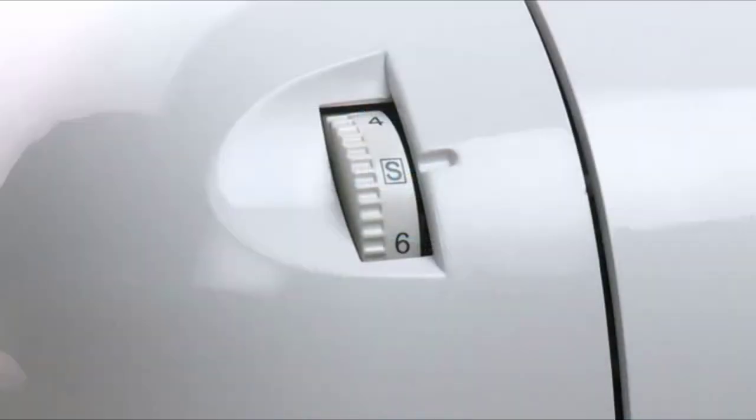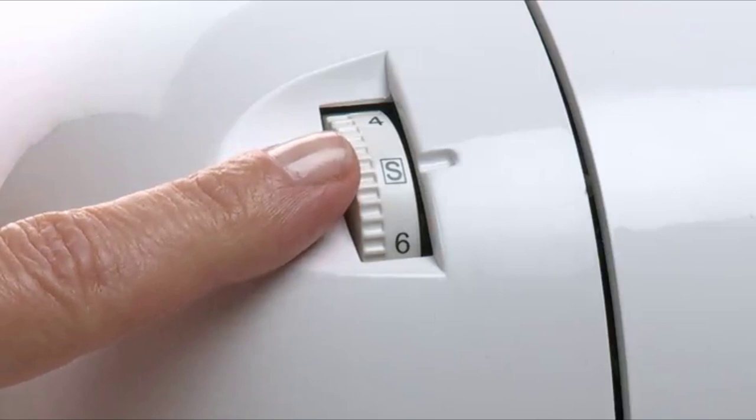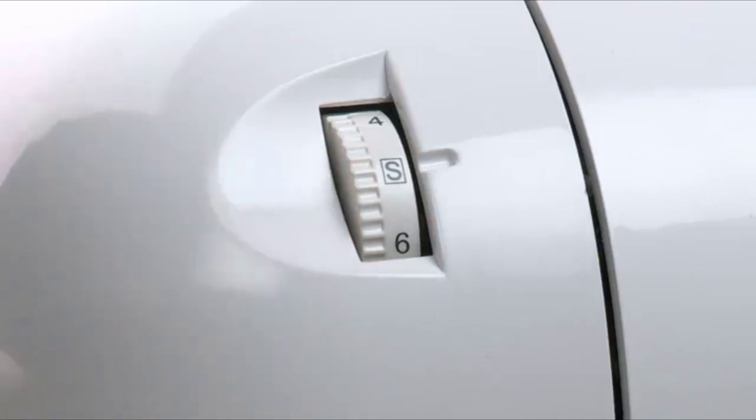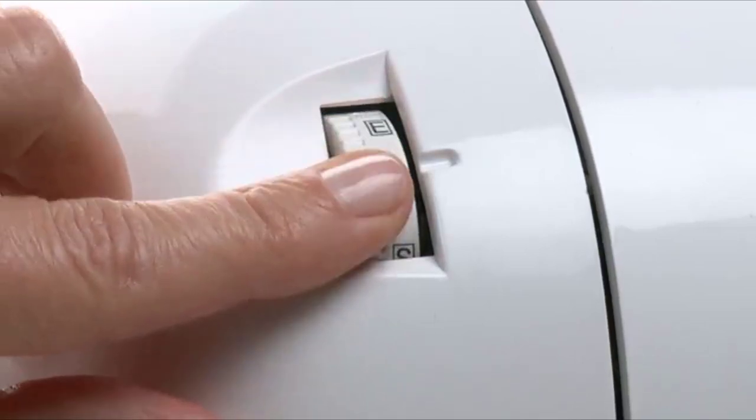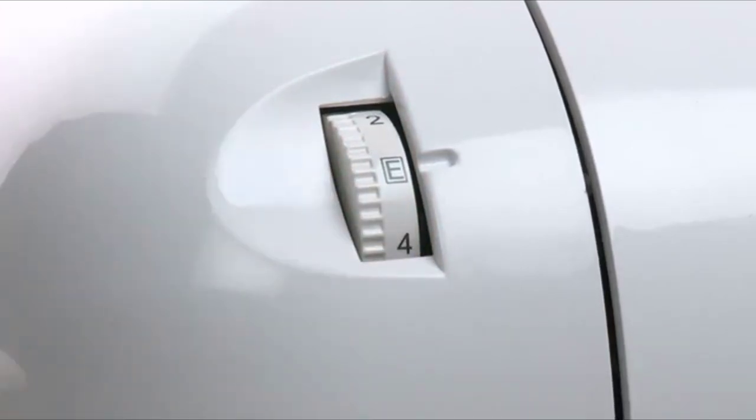The thread tension control should be set at S for regular sewing mode. However, the thread tension control should be set to E for embroidery once the embroidery unit is attached.